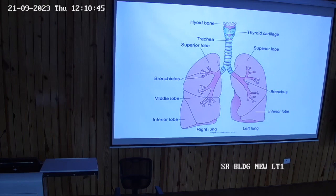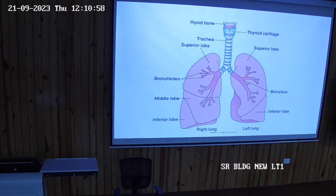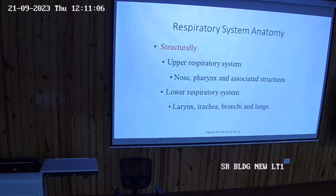The secondary bronchi are three for the right lung and two for the left lung. Then further you can count ten tertiary bronchi on the right side and eight or nine on the left side. This is the tracheobronchial tree.